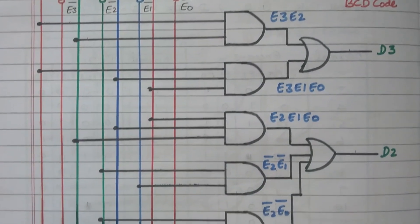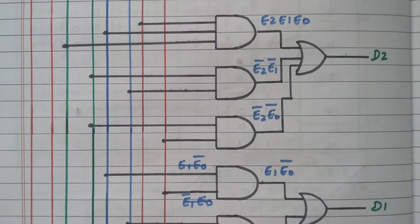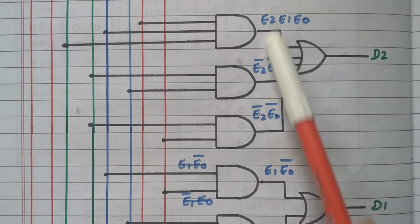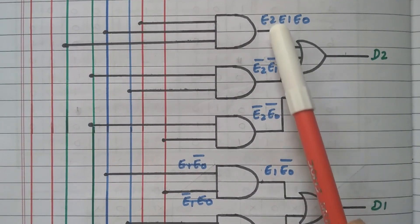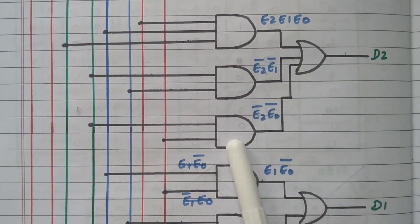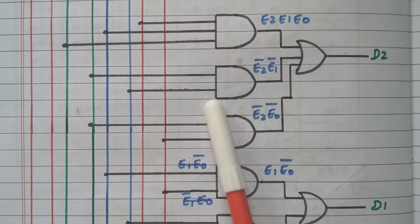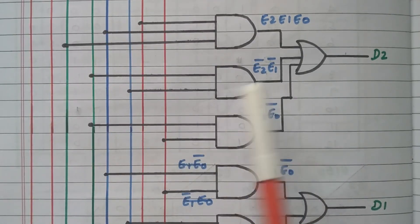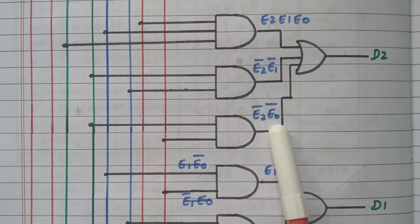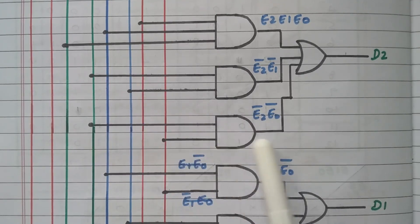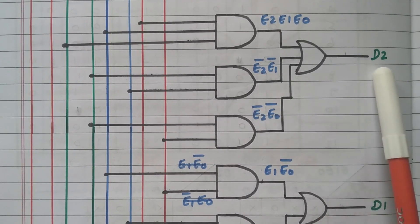For D2: three AND gates produce E2·E1·E0, E2'·E1', and E2'·E0' respectively. E2 and E1 dash are connected to one AND gate; E2 dash and E0 dash to another. These three outputs are added by an OR gate to give D2.